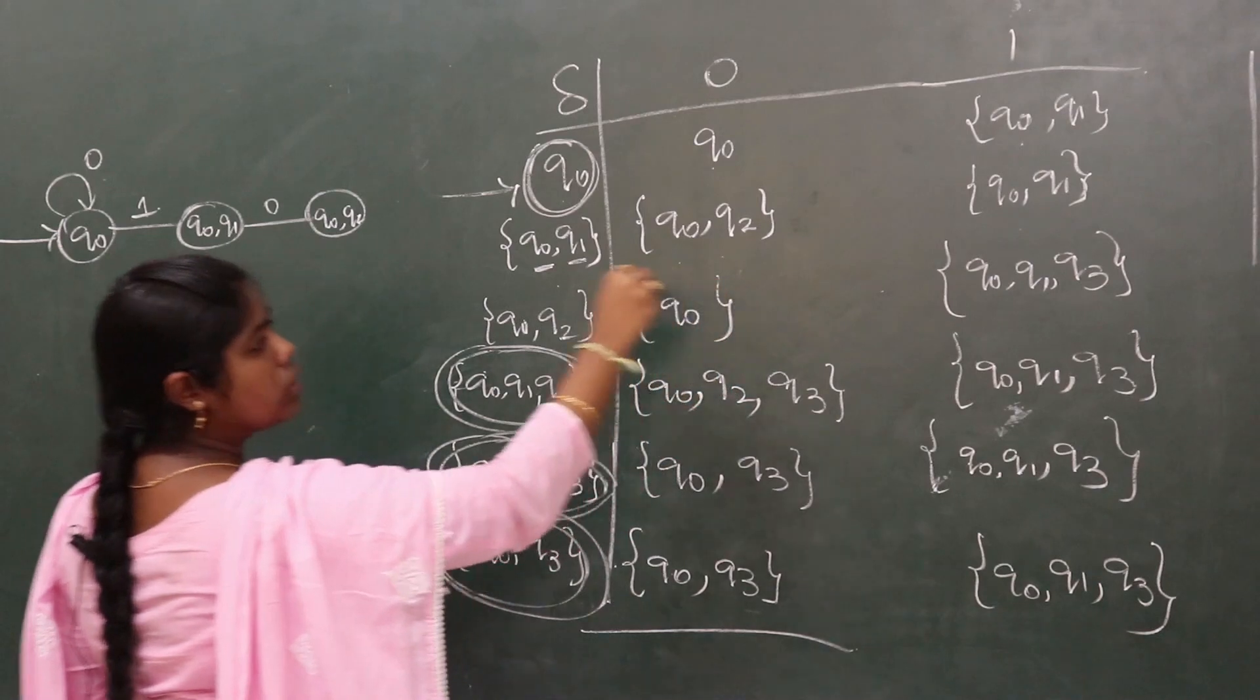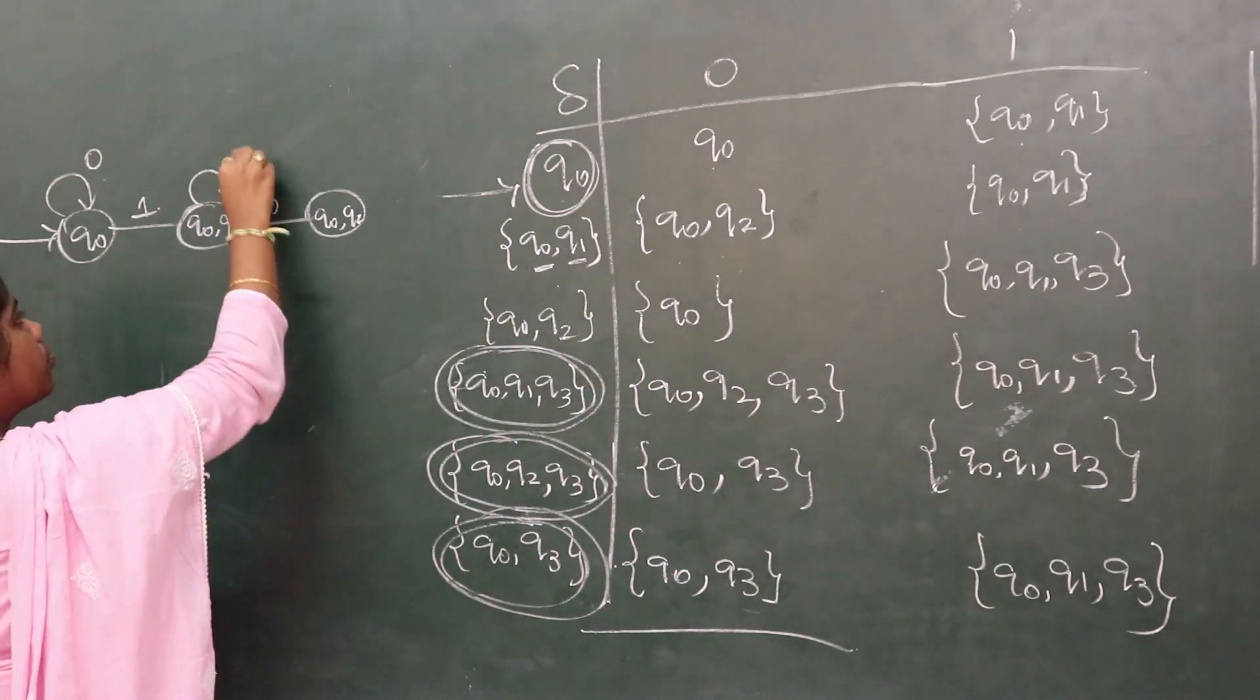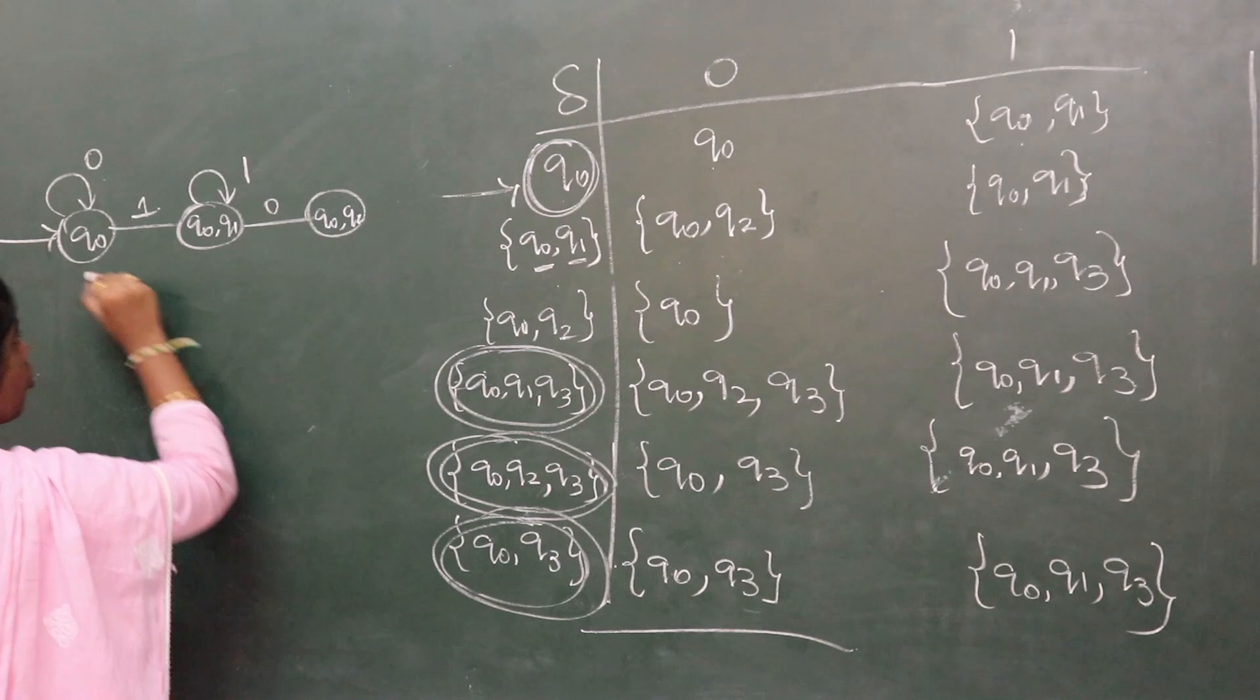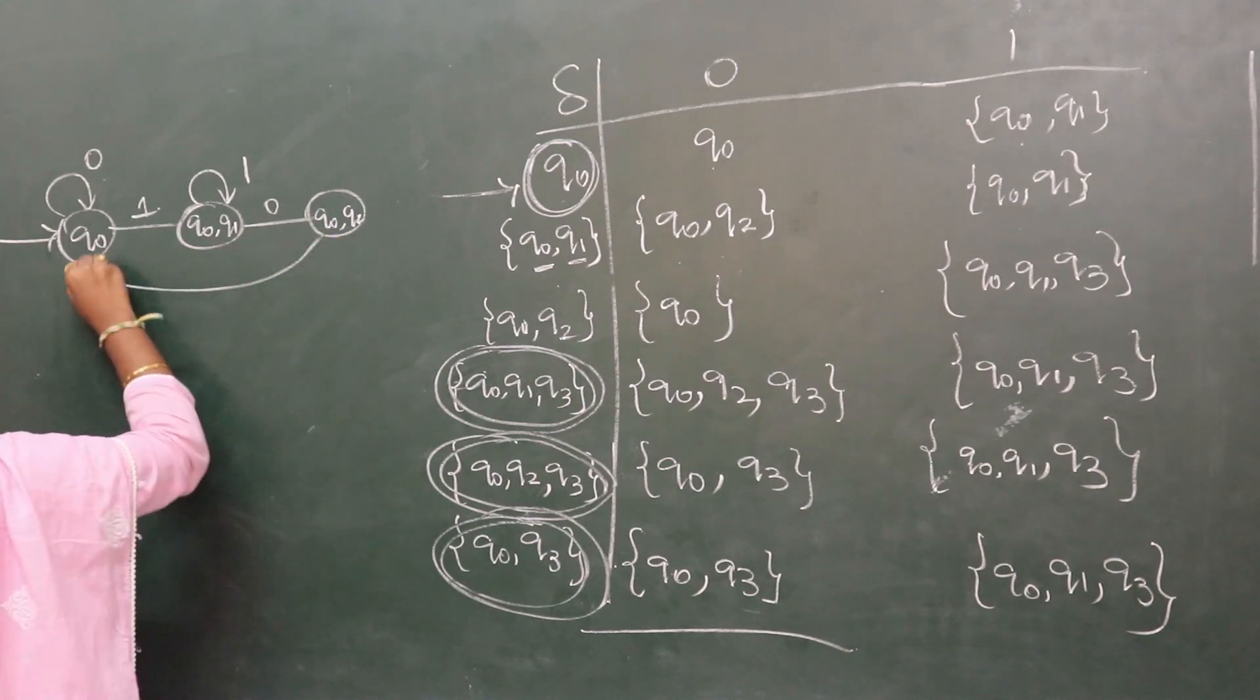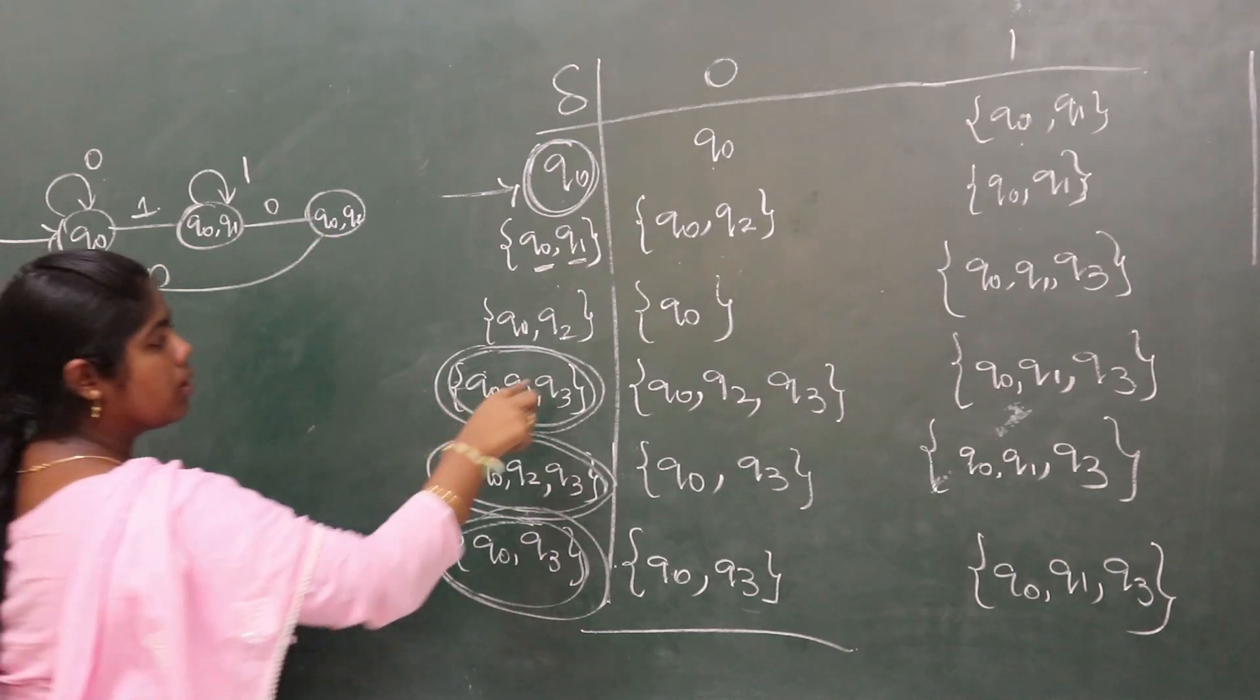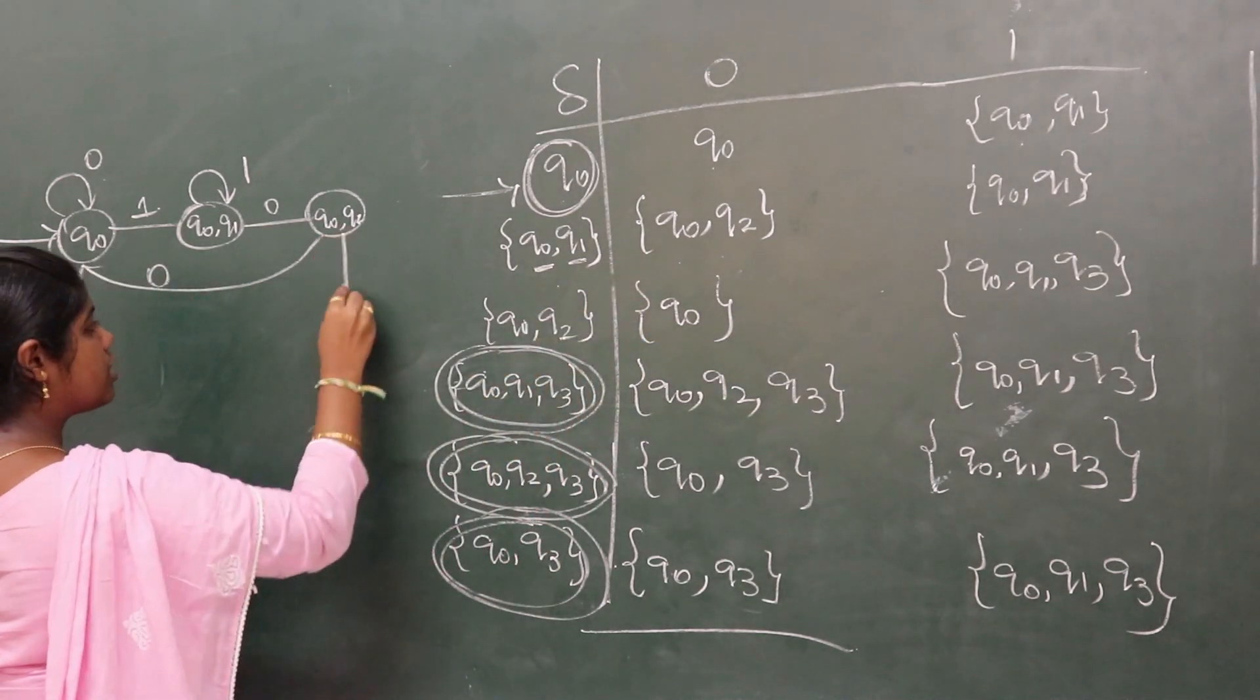Next, q0, q1 on 0 goes to q0, q2, which is a new state. q0, q1 on 1 goes to q0, q1, q3.